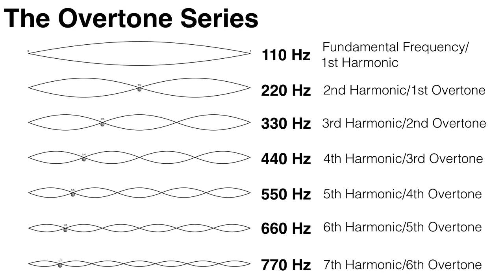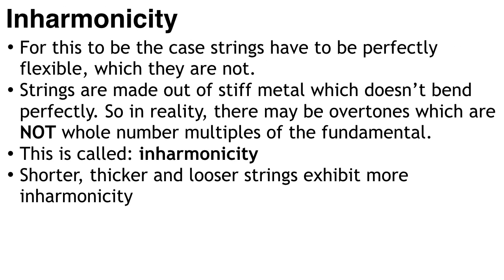In theory, all overtones are just whole number multiples of the fundamental frequency. However, for this to be the case, strings have to be perfectly flexible, which they are not. Strings are made out of stiff metal which doesn't quite bend perfectly. So in reality, there may be overtones which are not whole number multiples of the fundamental. This is called inharmonicity. The shorter, thicker, and looser a string is, the more inharmonicity it exhibits, precisely because shorter and thicker strings cannot bend easily.